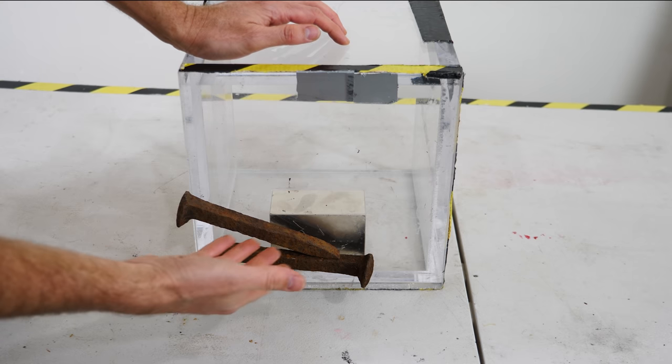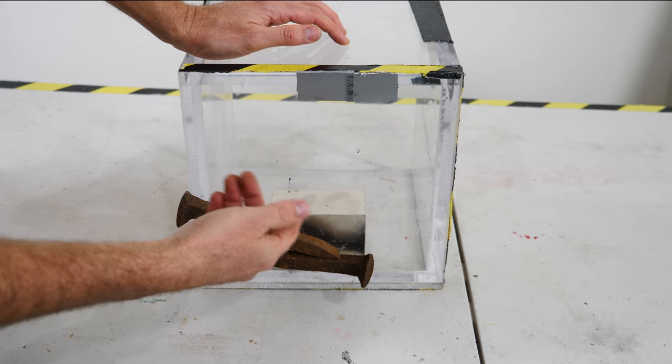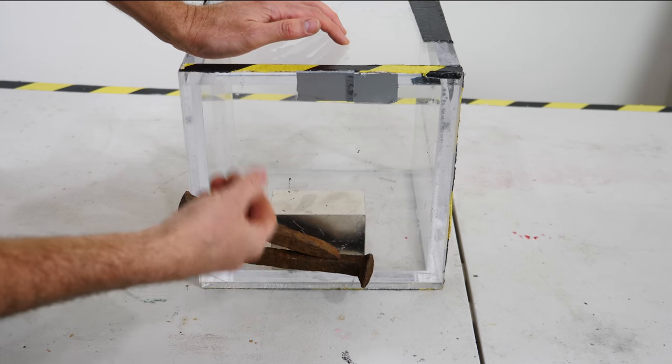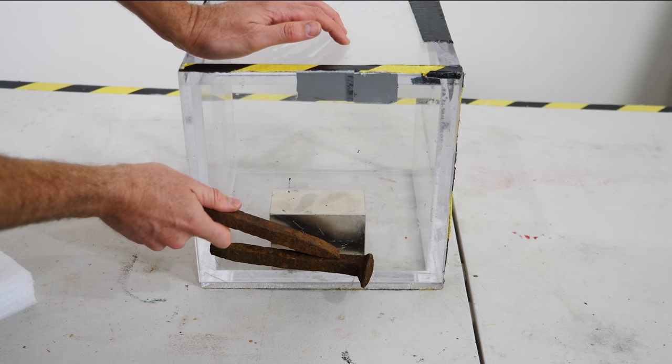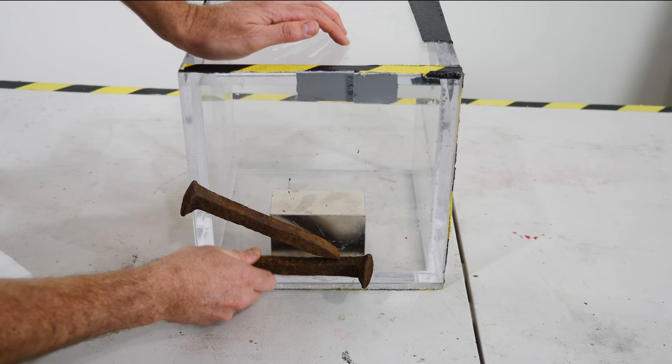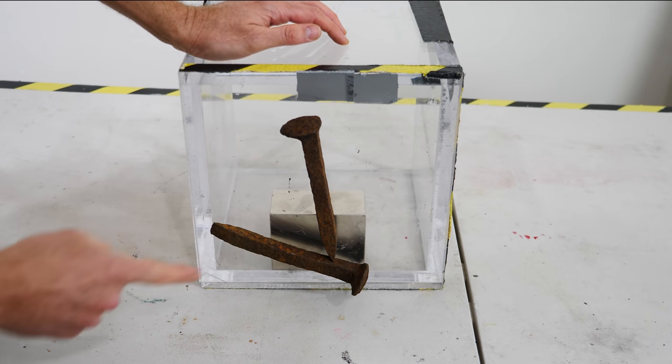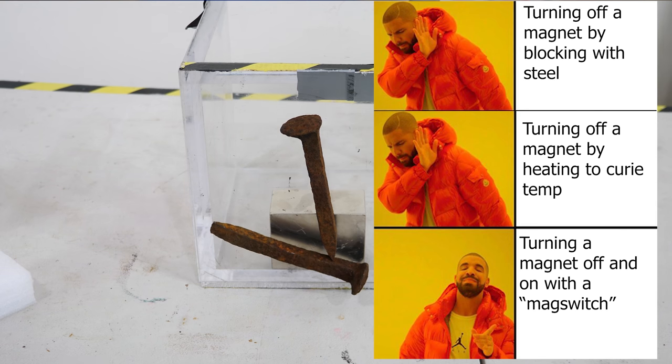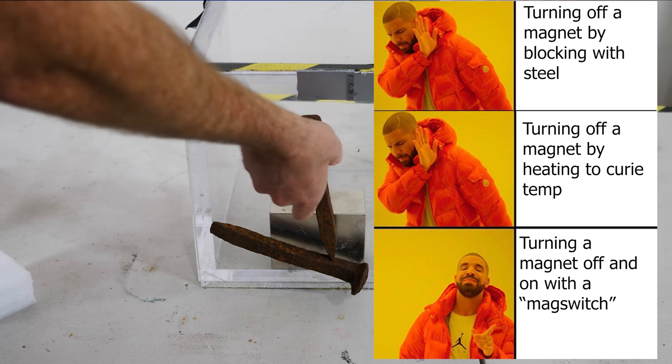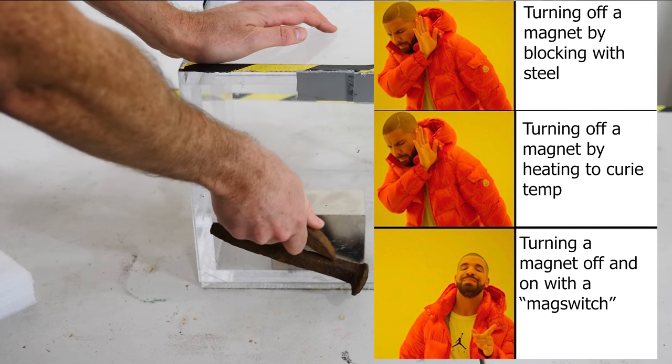Now if it were an electromagnet you could easily just turn off the current going through it and it would no longer produce a magnetic field. But with permanent magnets like this neodymium magnet here, it's not so easy to turn it off, but it actually can be done. So let me show you two ways that you can turn off a magnet or block its magnetic field, and then I'll show you the true way that you can actually turn a magnet off and on again.